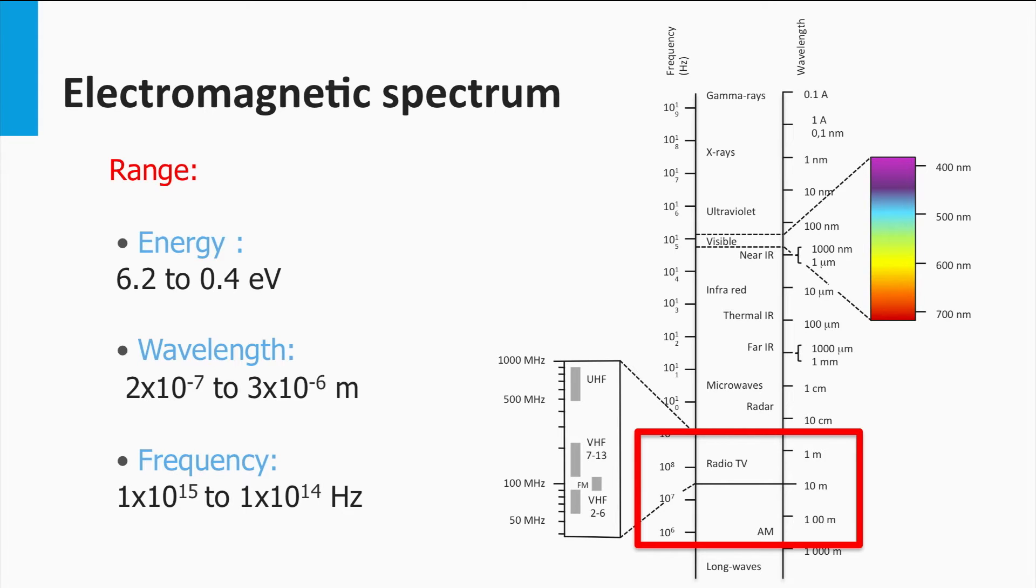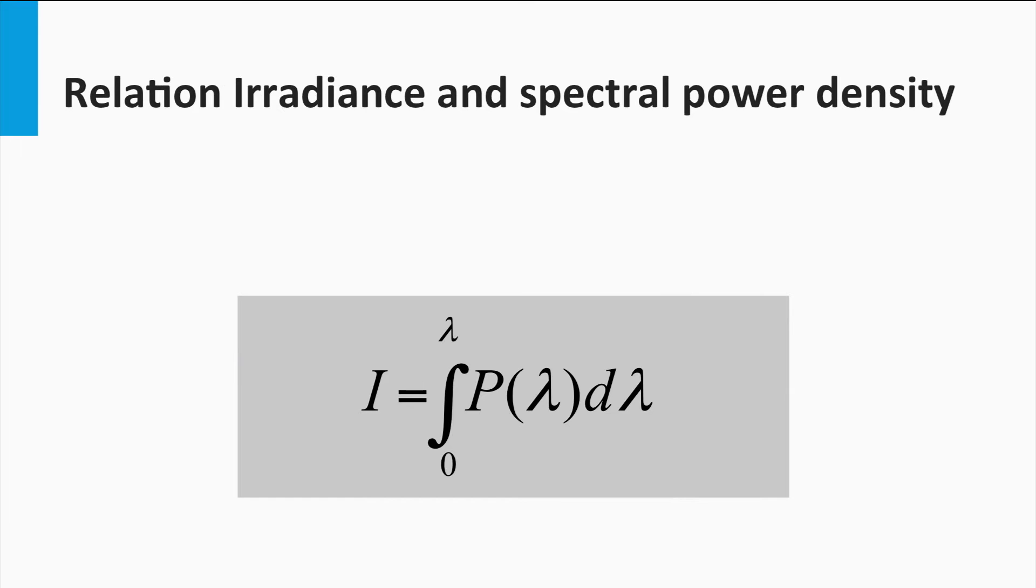The question now is, in which spectral range does the Sun irradiate light? For that I will introduce the quantities irradiance and spectral power density. Let's start with the irradiance. The irradiance is the power per unit area and is usually expressed in watts per square meter. The irradiance does not provide us any information about the spectral shape of the light source. In our course we give the irradiance the symbol I.